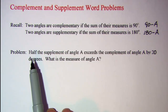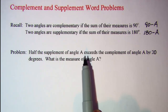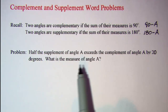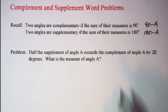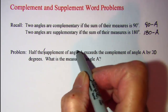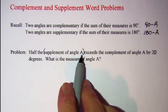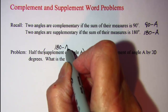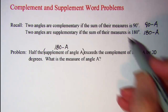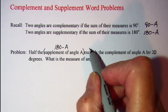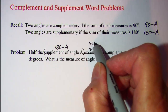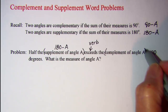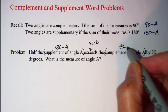The problem we're going to be working on is: half the supplement of angle A exceeds the complement of angle A by 20 degrees. What is the measure of angle A? Where we have supplement of angle A, I'm going to translate that as 180 minus A. Exceeds is my verb, so that's where my equal sign goes. And then complement of angle A will be translated as 90 minus A.